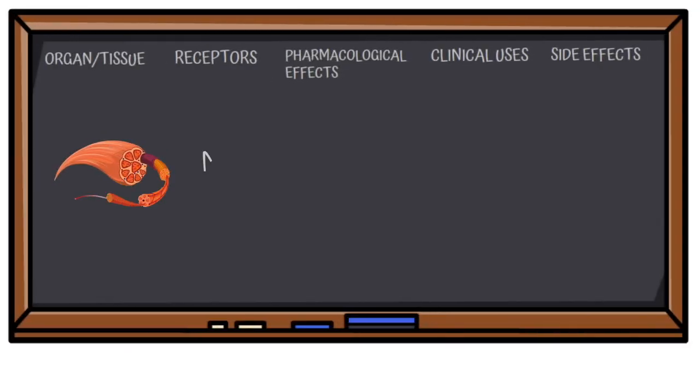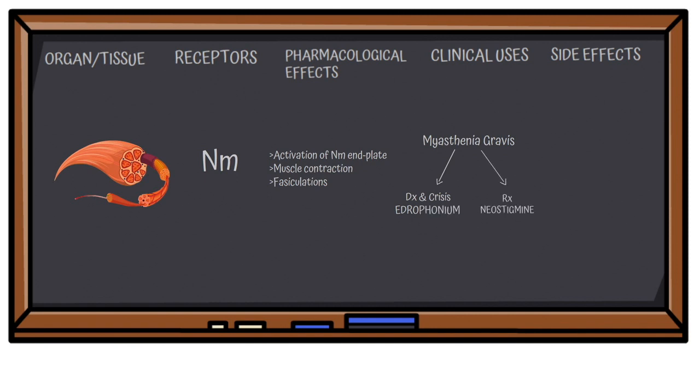At the neuromuscular end plate, we have the nicotinic Nm receptors which cause activation of the neuromuscular end plate resulting in muscle contraction and fasciculations. Clinically, it is useful for treatment and diagnosis of myasthenia gravis. For diagnosis, we use edrophonium, and for treatment, we give neostigmine. It is also useful for symptomatic management of snake venom poisoning.